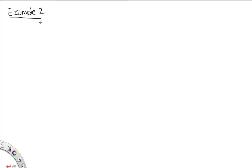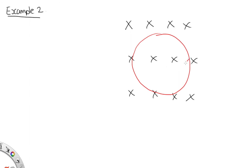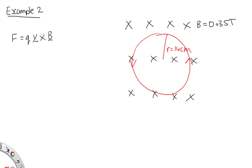Example 2: A proton is moving in a circular orbit of radius 14 centimeters. Since a proton is positive, it goes anti-clockwise in this magnetic field. The field strength is 0.35 teslas, and we're asked to find the speed of the proton. The force acting on the proton is the magnetic force QV × B, and since it travels in a circular path, the resultant force is described by circular motion: mv²/r.